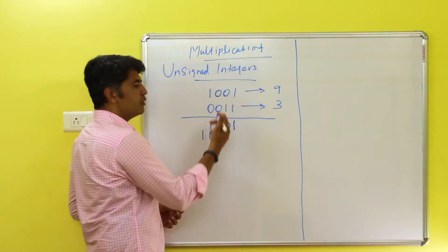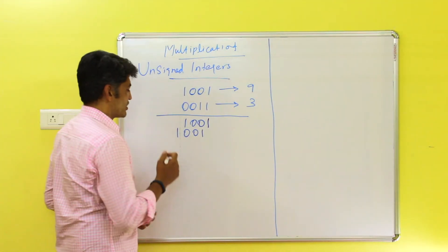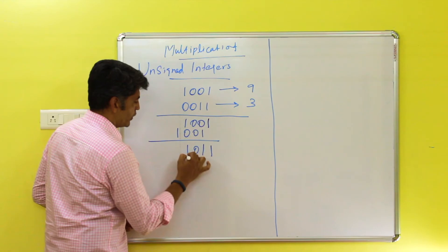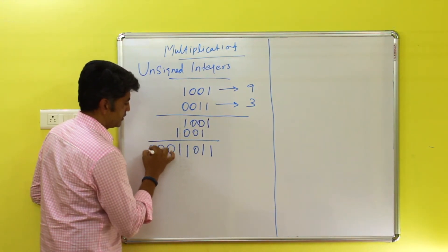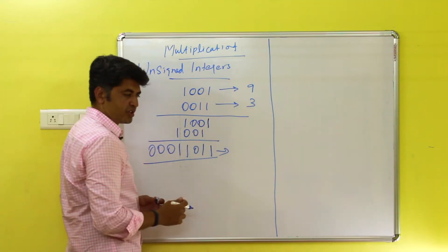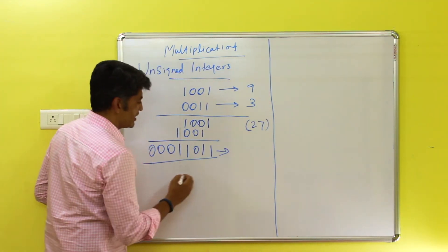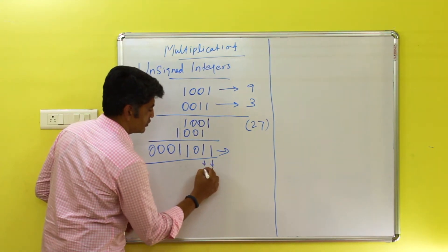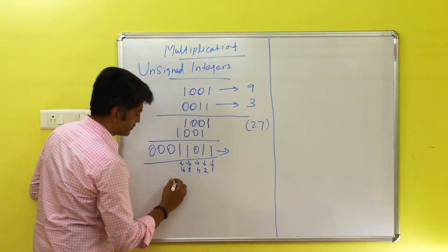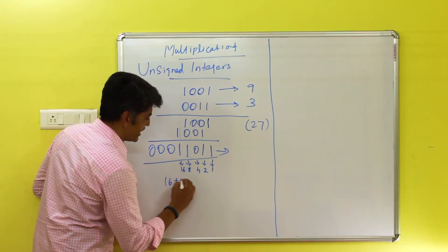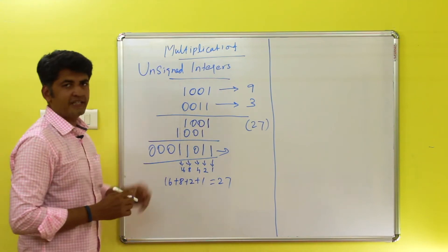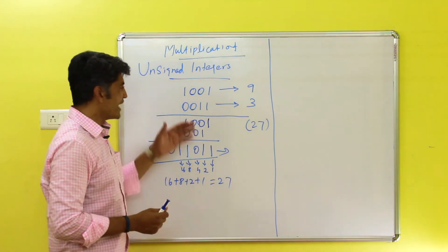When multiplying two 4-bit binary values, the result will be 8 bits. Adding the partial products gives 1 1 0 1 1 as the 8-bit result. Checking this: the bit positions represent 1, 2, 4, 8, and 16. So 16 + 8 + 2 + 1 = 27. Since 9 × 3 = 27, this is correct. This method is called straightforward multiplication of unsigned integers.